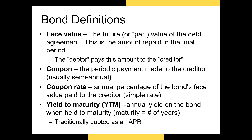The coupon is the regular payment the borrower makes to its bondholders every six months, every year, or sometimes every month. The coupon is determined by the coupon rate, which is reported when the bond is first issued. The coupon rate is the percentage of the face value that the borrower pays to the bondholders each year. For example, if a bond has a coupon rate of 5%, a face value of $1,000, and makes annual payments, it would make annual coupon payments totaling $50.